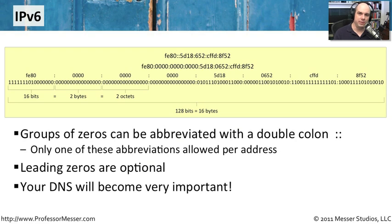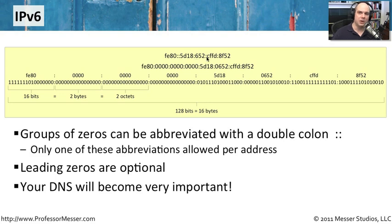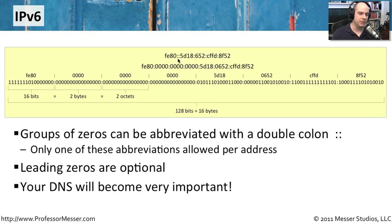IPv6 addresses are much bigger, with a lot more to look at. We've moved away from dotted decimal — IPv6 addresses are now represented in hexadecimal, base 16. These addresses look something like fe80::5d18:652, where colons take the place of the dots we used before. When you see two colons together, that represents a series of zeros. A full IPv6 address written out would show sections of four hex values separated by colons, but we use shortcuts: a string of zeros can be replaced with a double colon.